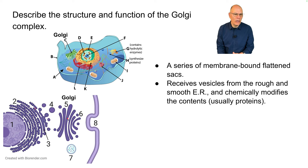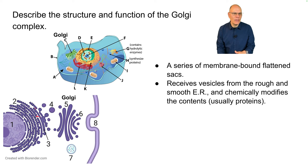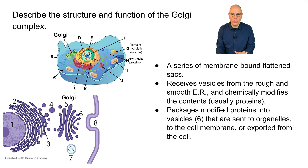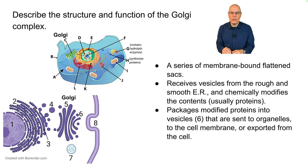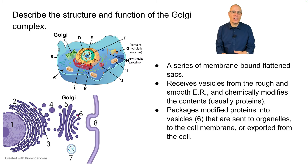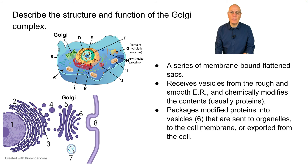Here's the smooth ER, here's the Golgi, and here's a vesicle bringing something from the ER system to the Golgi. The Golgi packages those modified proteins into vesicles, shown at 6, that are sent to organelles like lysosomes at 7, to the cell membrane, or exported from the cell.